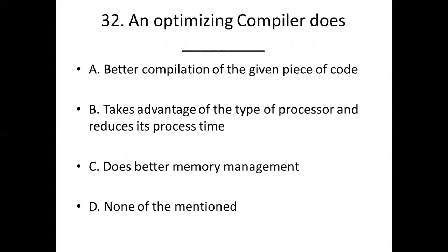Question 32: An optimizing compiler does? Option A: better compilation of the given piece of code. Option B: takes advantage of the type of processor and reduces its processing time. Option C: does better memory management. Option D: none of the mentioned. Answer: Option B — takes advantage of the type of processor and reduces its processing time.